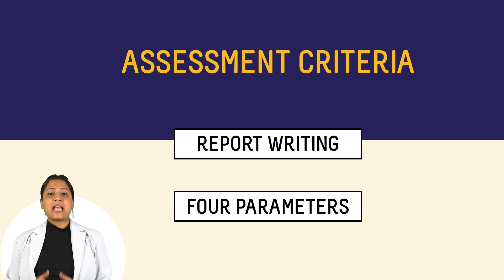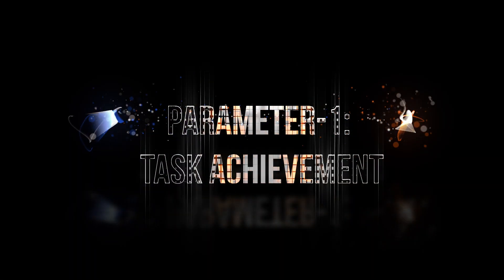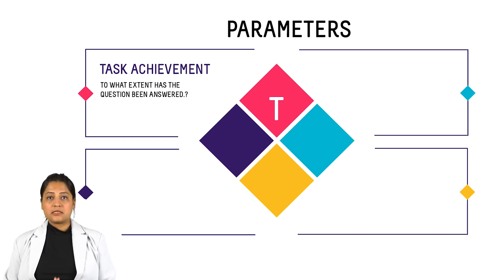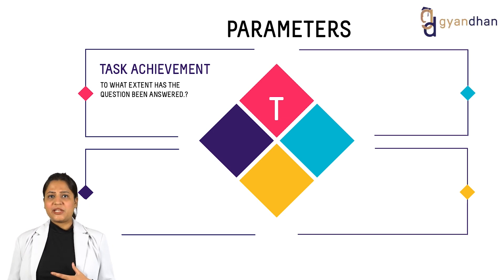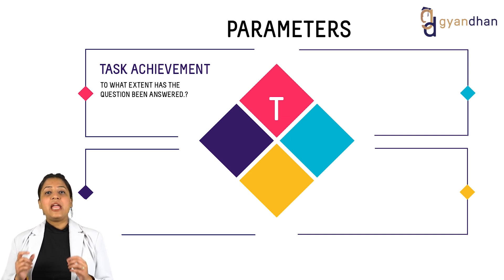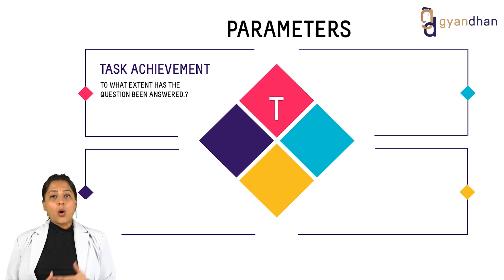Examiners who evaluate writings give a band score on the basis of four parameters. The first parameter checks if the question has been answered properly, if all the key information has been reported in the writing correctly, if data presented is accurate, and if the word count is above 150. If somebody wants to achieve a high score in task achievement, then all these requirements should be fulfilled.